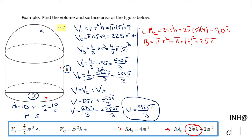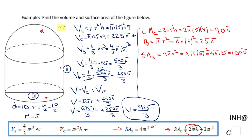The last piece of the surface area is the curved surface of the hemisphere. First, I'll find the surface area of a full sphere using the formula 4 pi r squared. With r equal to 5, that's 4 pi times 25, which is 100 pi. Since we need only half of that, the surface area of the hemisphere is one half of 100 pi, which equals 50 pi.